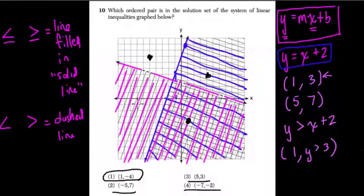And negative 7, negative 2. Well, that's here at negative 7, negative 2. That's only in the pink area. So this point, 1, negative 4, is the only one that falls in both inequalities.